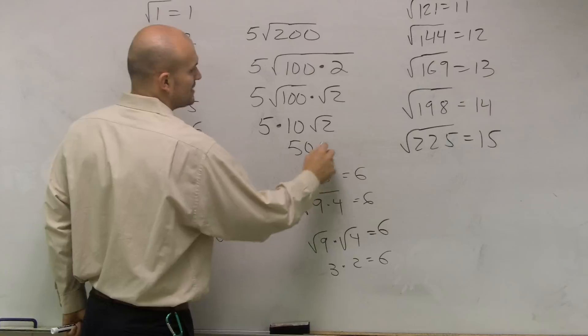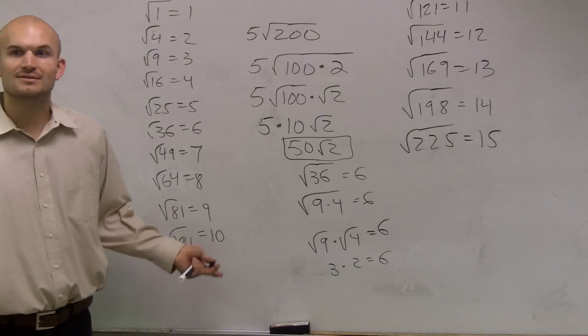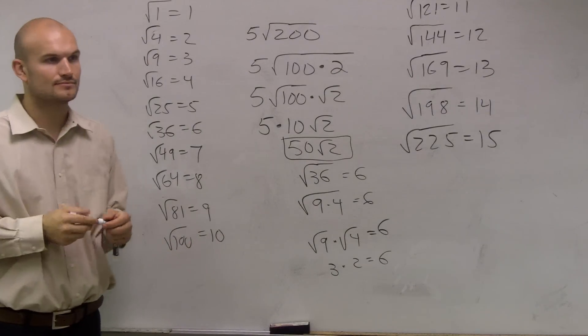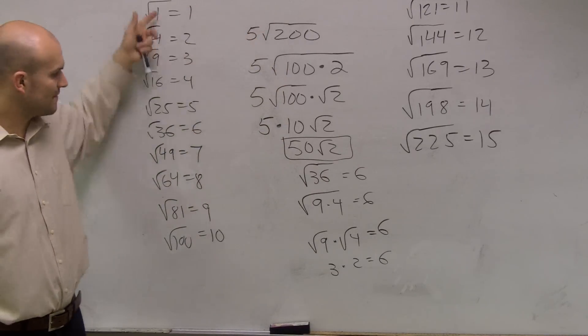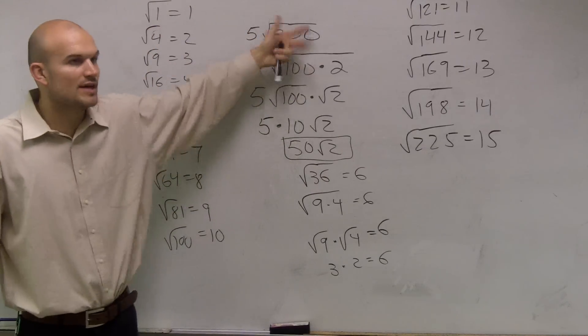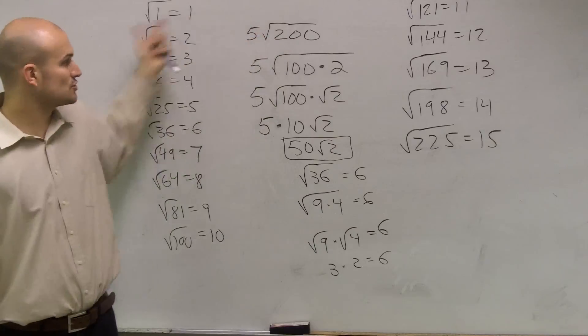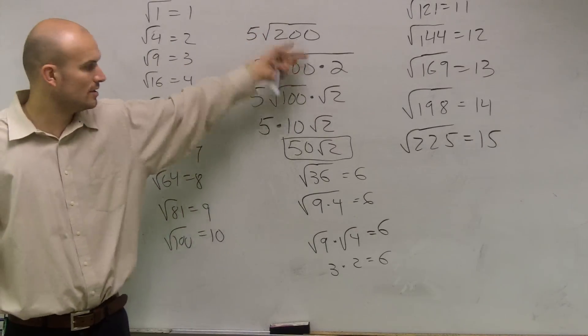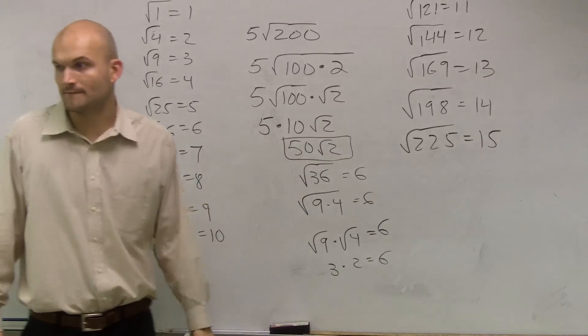5 times 10, though, is 50 radical 2. So I just multiply that 5 times by 10. So the important thing is figure out the largest square number that you can rewrite your radical with those square numbers. Then take the square root of the number you know, leave whatever remainder you have, and then if there's a number outside, you've got to multiply it. Okay?